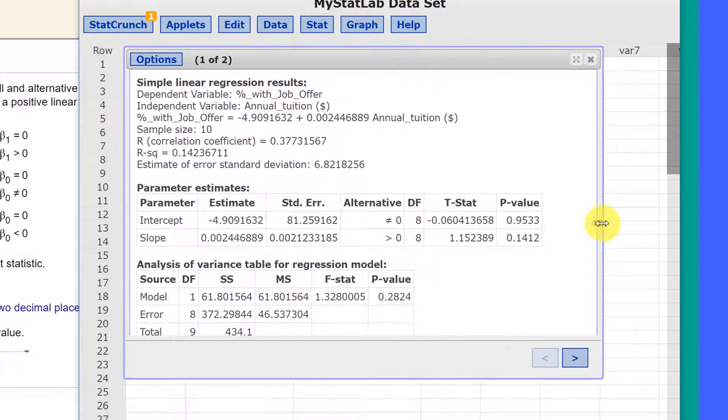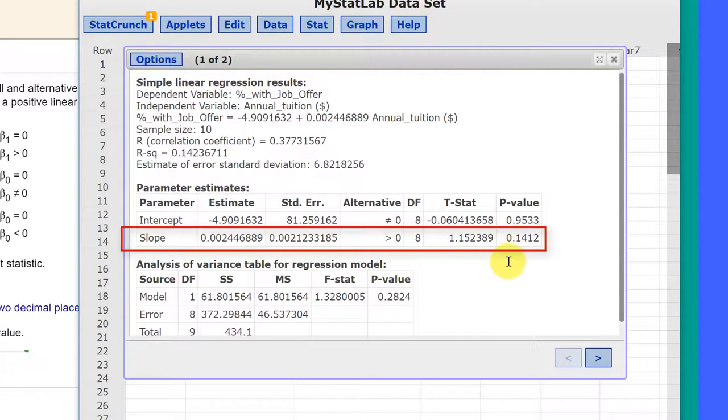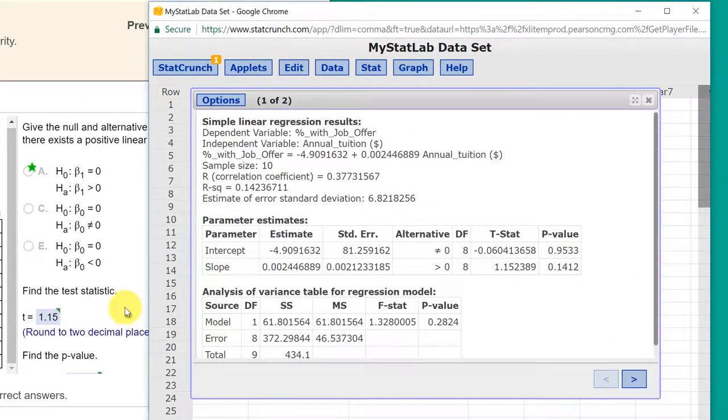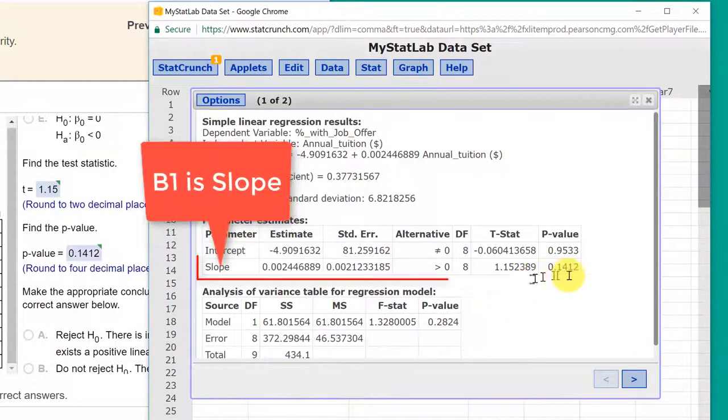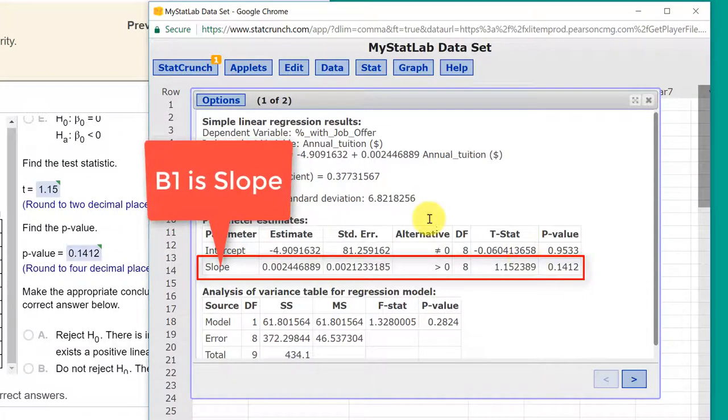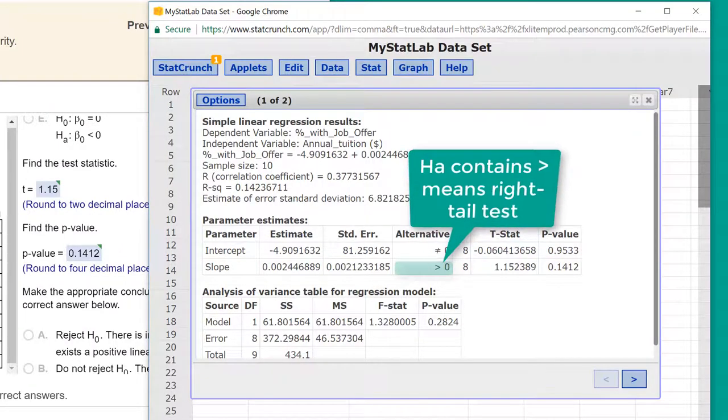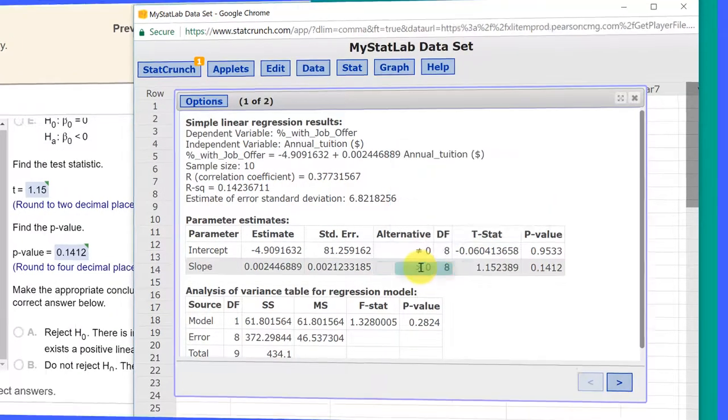I'm going to expand this so you can see those. Our t statistic, 1.15, which is the answer they want there. We scroll down, p-value, 0.1412 they want, and that's the value we have. Again, because our model is that the slope is positive. That's our alternative, which is a right-tail test.